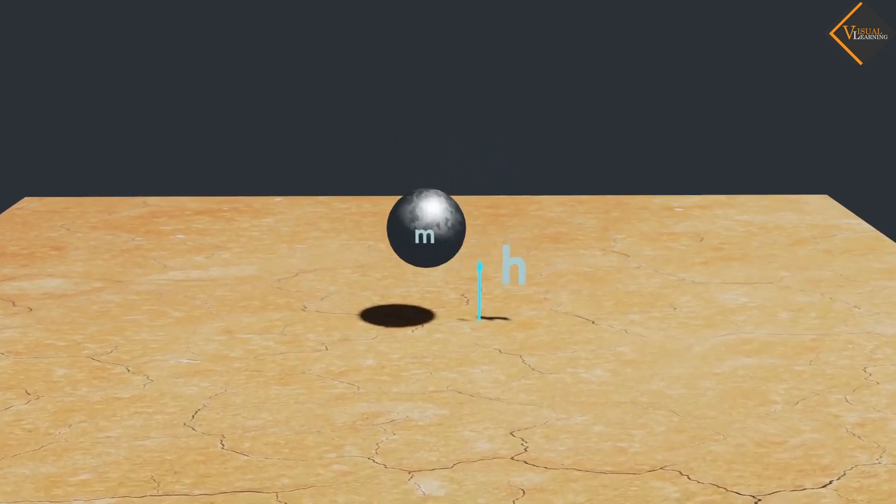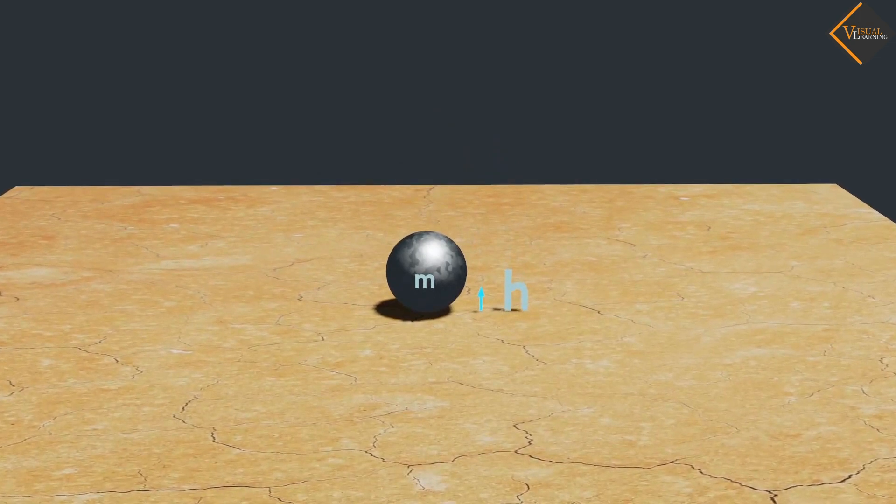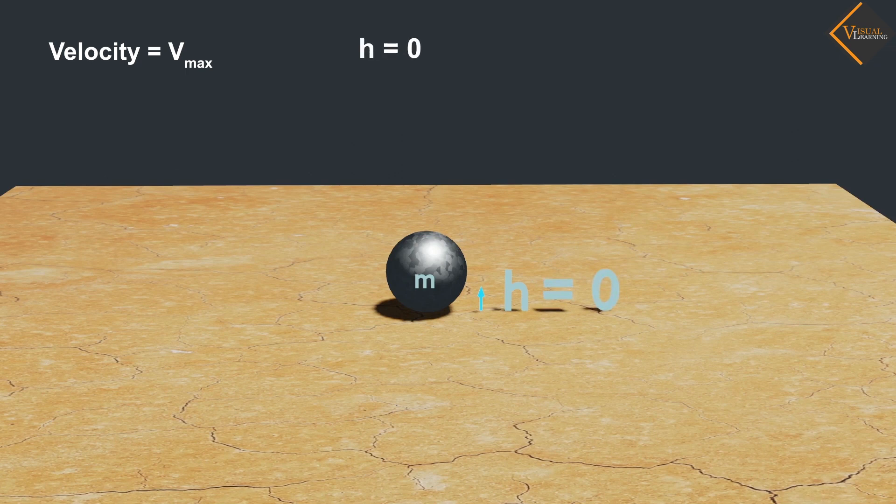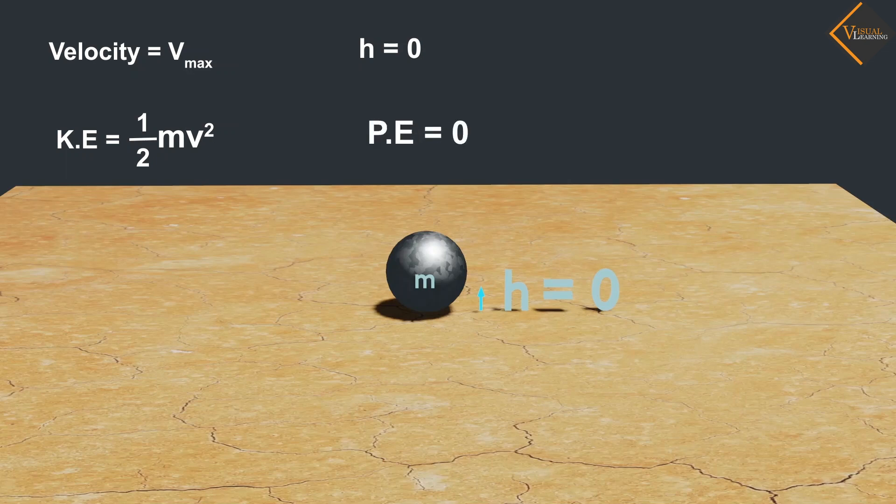When the ball hits the ground, the velocity of the ball reaches its maximum value and the height becomes zero. So, the kinetic energy at this point is equal to half mv square, and potential energy at this point is equal to zero.